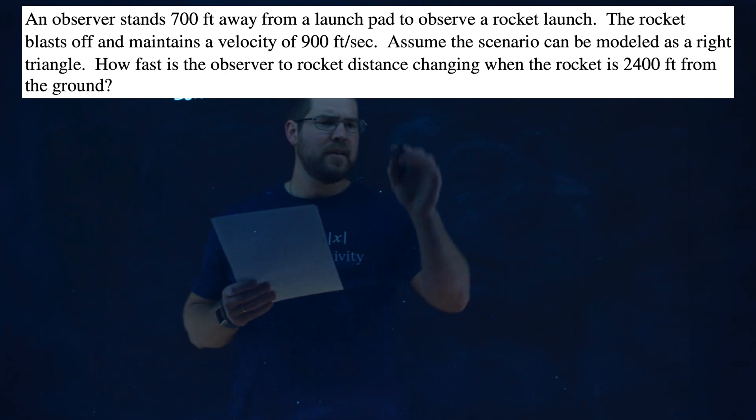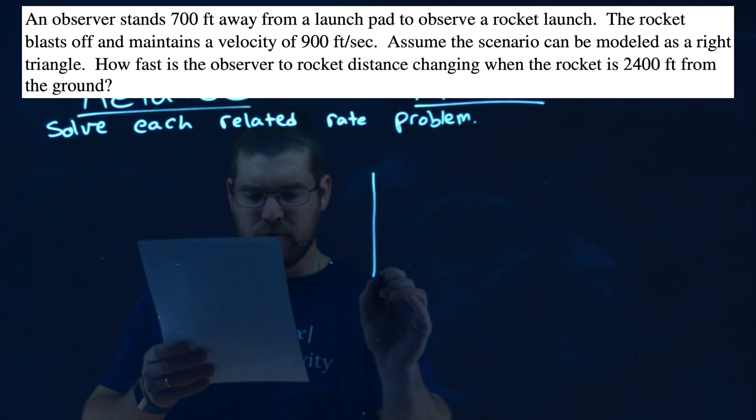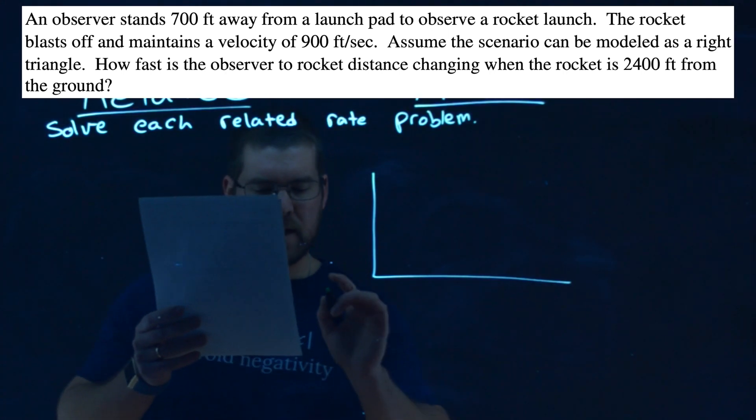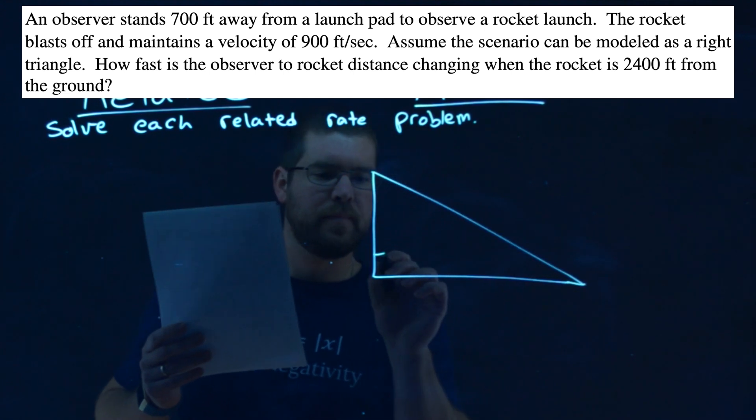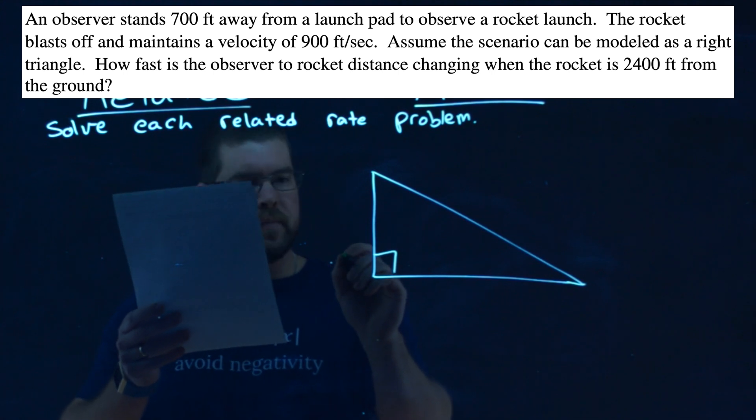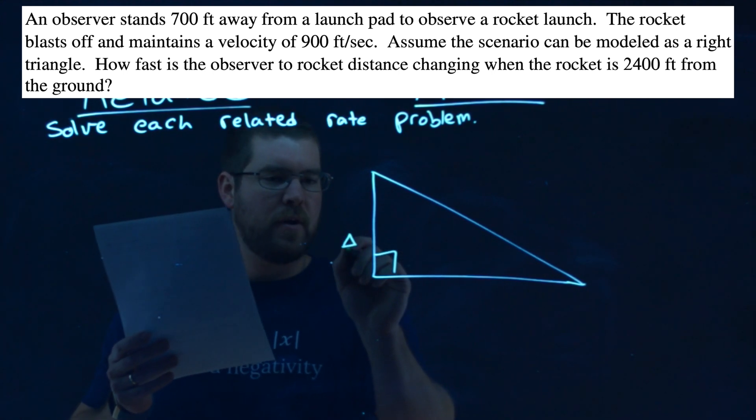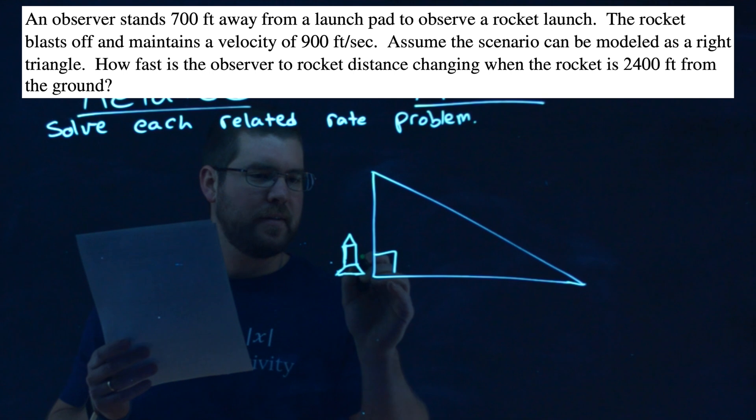So let's get an image. They said we have a right triangle going on here, we can assume. So I'm going to put this out here, a little right triangle, if I can draw one nicely. So here's that rocket. Let me draw a little rocket here. Don't judge my drawing skills, please. Let me have a little flare thing at the bottom here. Okay, here's my rocket.